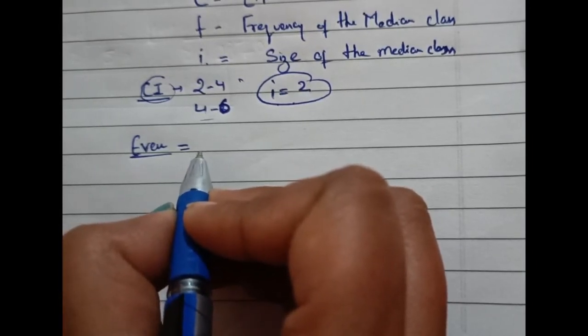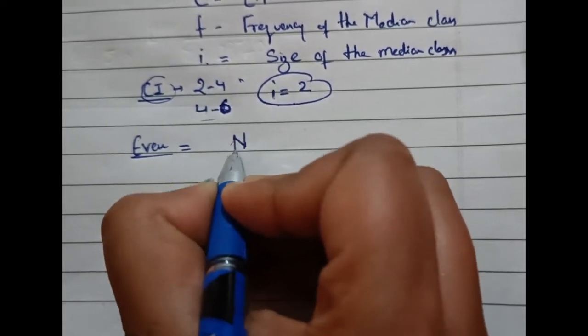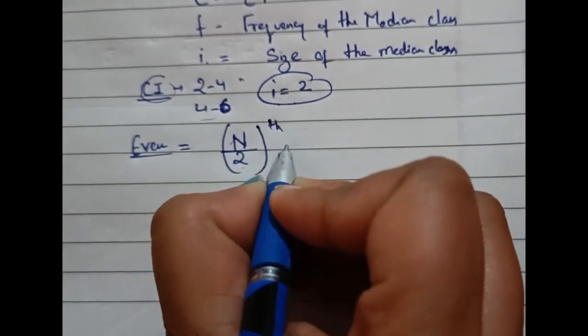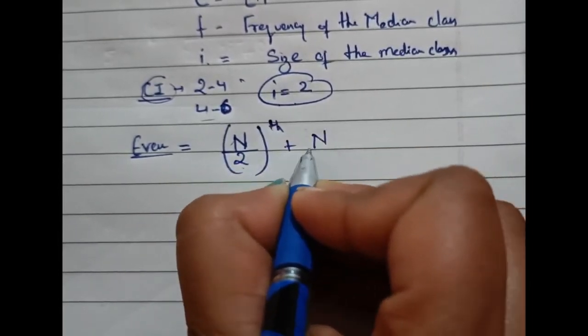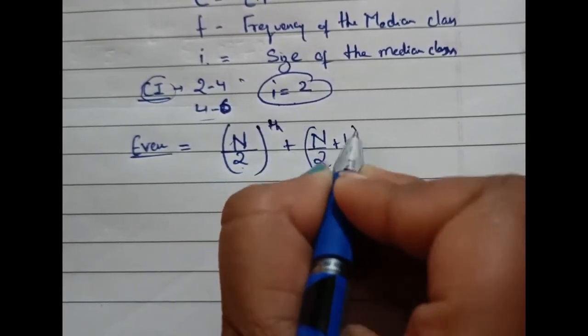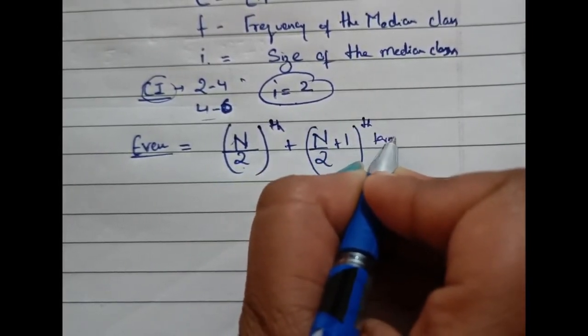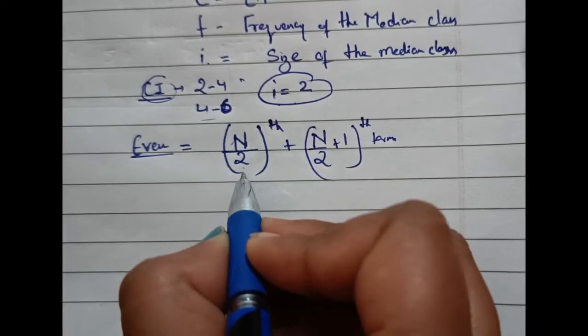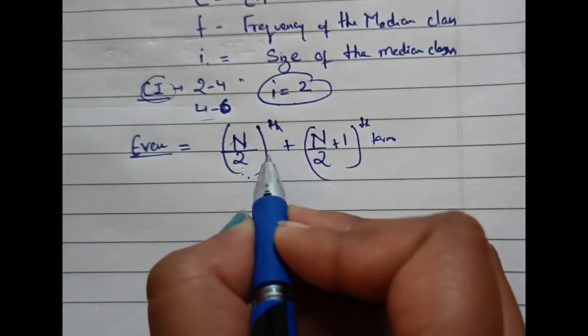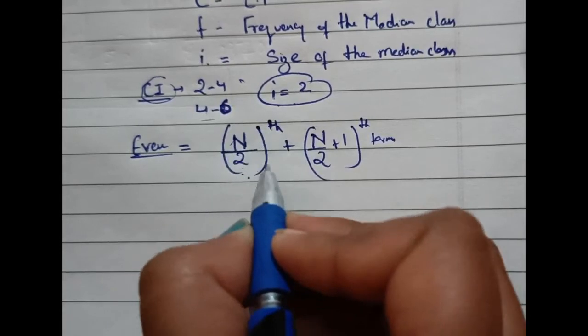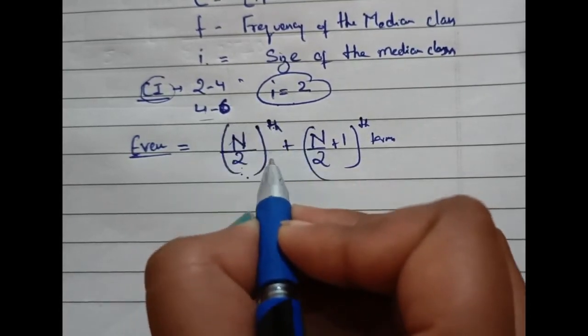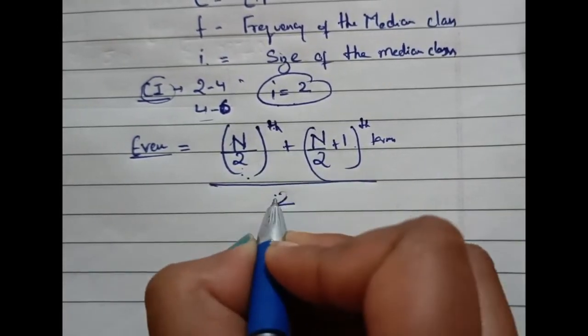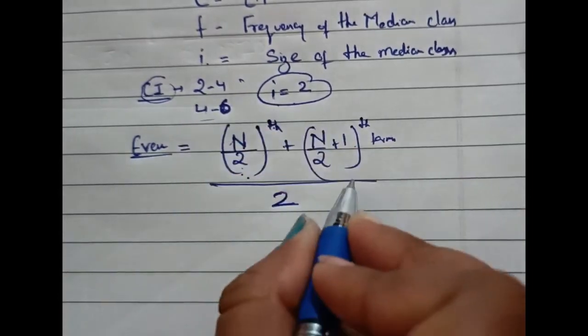If your data is even, what you'll do is n by 2th term plus n by 2 plus 1th term. You'll divide your total number of data by 2, total frequency divided by 2. Then you'll see where the term lies, and you'll add the next term to it and divide both the terms by 2. You'll get your answer.